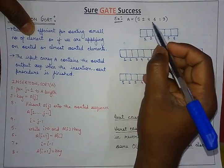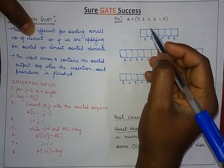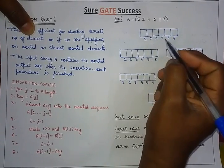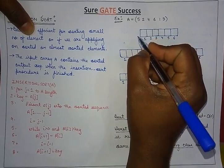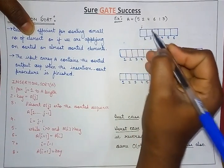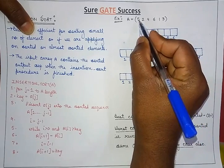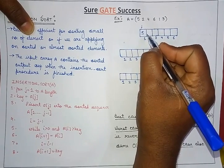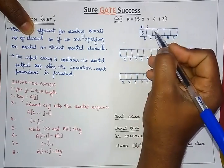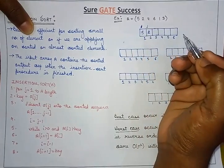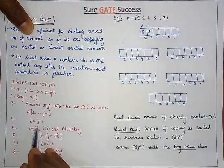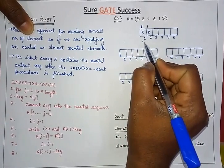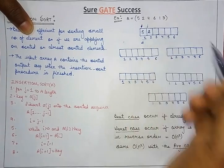Let's understand with the help of this example. We have an array with six elements. We start with an empty left hand, so we start with an empty array. First, j equals 1 and the key is a[j] = 5. Since there is no element to compare, 5 is placed directly. Then j moves to 2 and the value 2 is inserted. i becomes j minus 1, so i equals 1. We check: is i greater than 0? Yes, i equals 1.